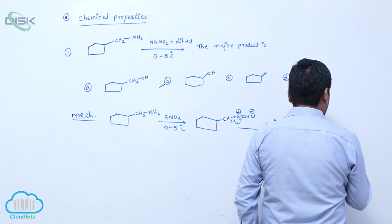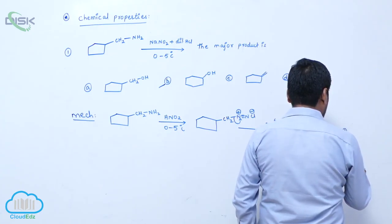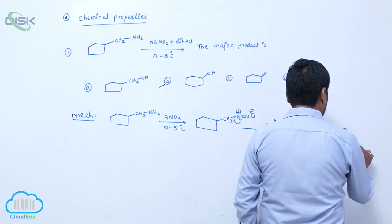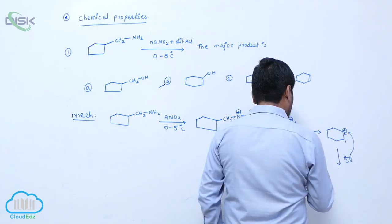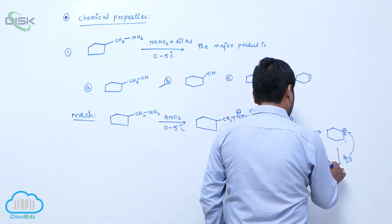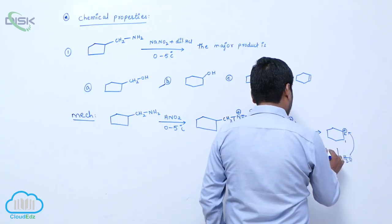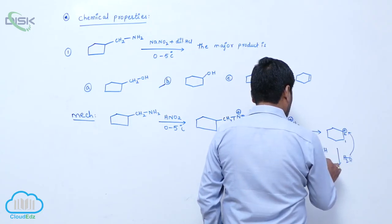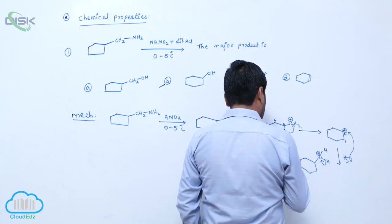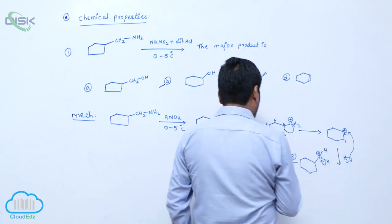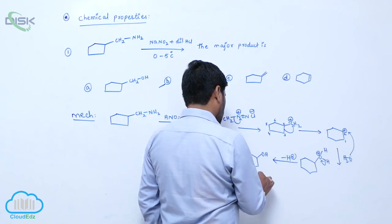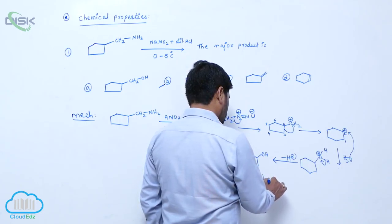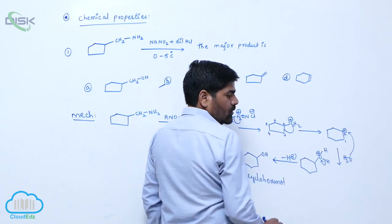So therefore it is more stable. Water molecule is added, it is obtained from nitrous acid. Finally, loss of proton takes place to form cyclohexanol.